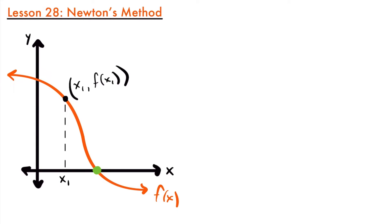If you look at this graph, we have this function f of x, and it has an x-intercept at this green point right here where it crosses the x-axis. At this point, the y-value is zero. We find the zeros of a function by setting the function equal to zero and solving for x. That's how we were taught to find the zeros.